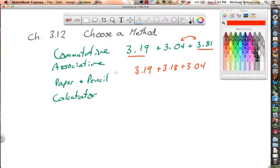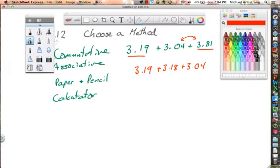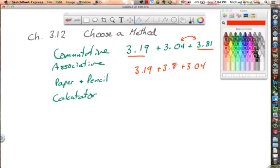And then, really, in your head... oops, I wrote 18 here. This is supposed to be 81. Did I do everything else right? Yeah. All right, so 3.81. You can do this one in your head. This is 7.00, because the 81 and the 19 make a whole other number. We've got 3 plus 3 is 6. And then if we have 7 plus 3.04, we can do that in our head, and it just becomes 10.04.